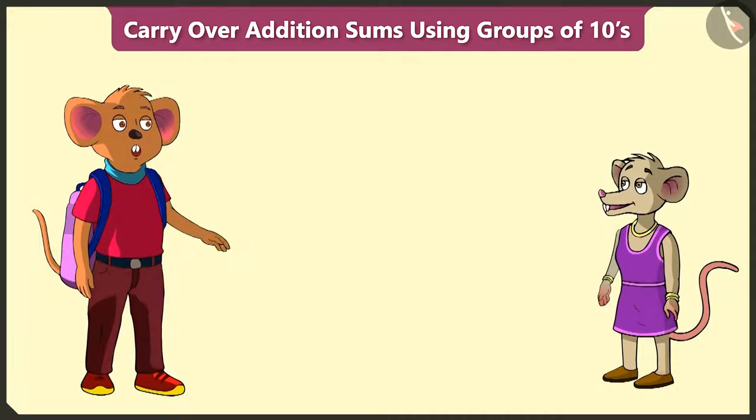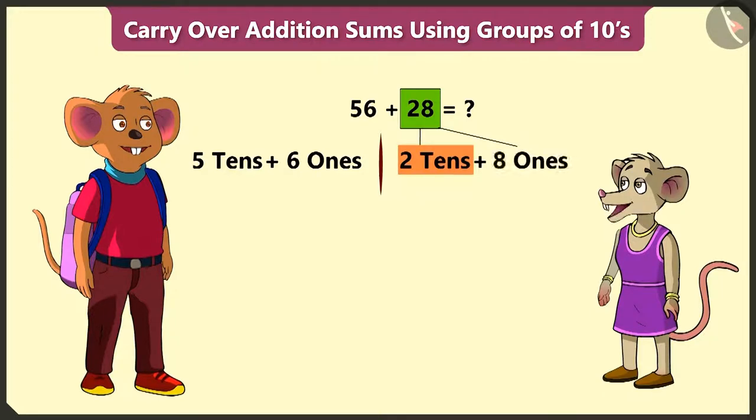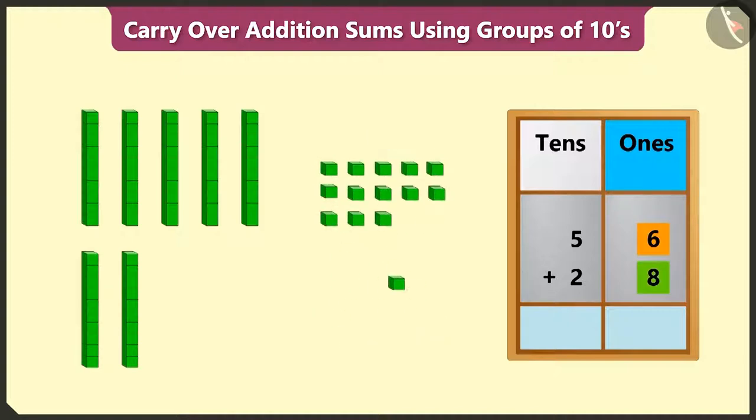Chichi, now tell me how much money do we have to pay in total? 56, that is 5 tens and 6 ones, and 28, that is 2 tens and 8 ones. Well done! And then first of all we will add the numbers in the ones place.